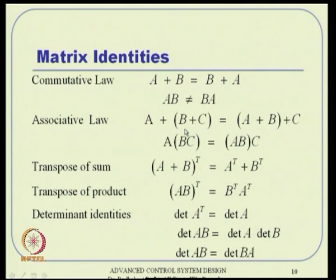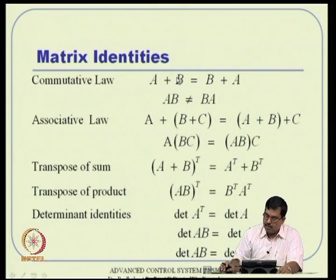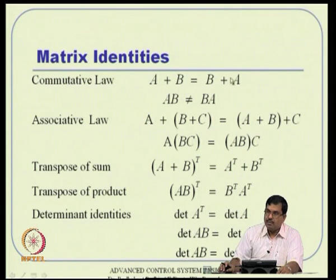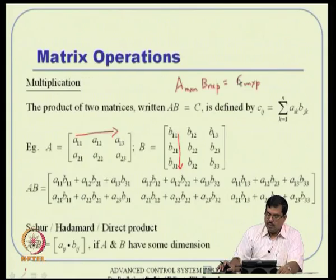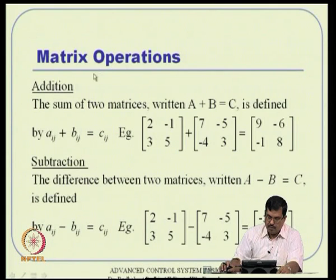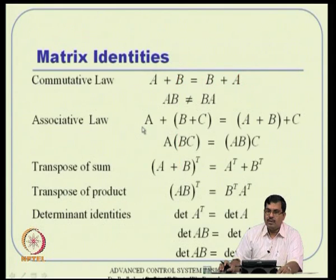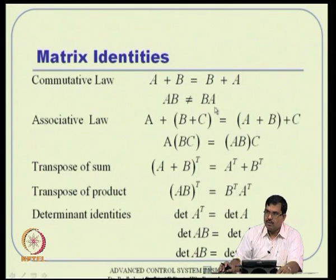Certain identities are worth noting. First, the commutative law: A + B equals B + A, since addition is element-by-element and order does not matter. However, AB is not equal to BA in general — this is a critical observation. We do not have the luxury of interchanging multiplication order.